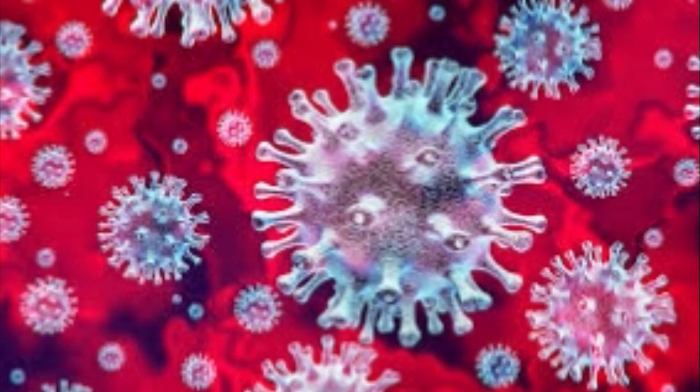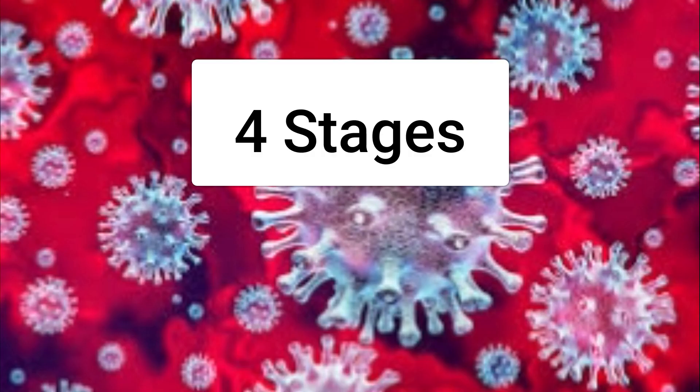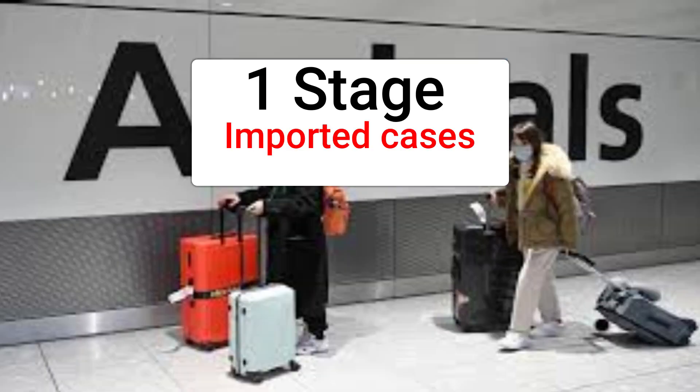What are the different stages of the spread of coronavirus? Here are the 4 different stages of the coronavirus spread. Stage 1: Imported Cases. These cases are the people who have traveled to foreign countries — places that have confirmed cases of the virus — and have come back to India.